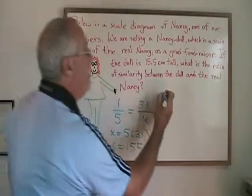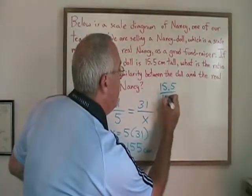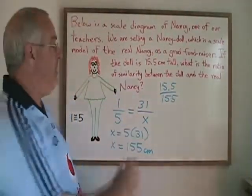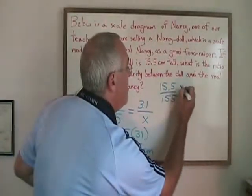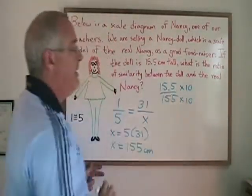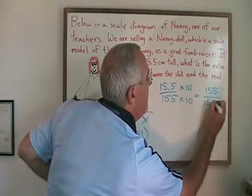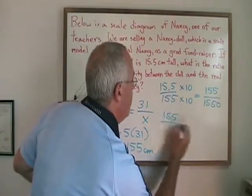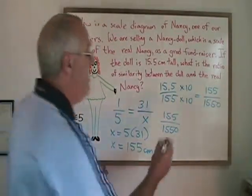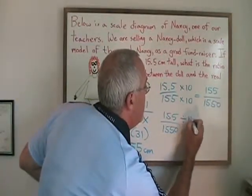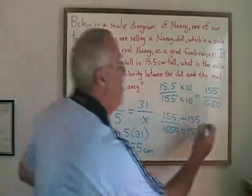Now we can take the height of the doll, 15.5, and put it over the height of the real Nancy, 155, and we have a ratio of similarity between the doll and Nancy. But this can be simplified. The first thing I will do is multiply both top and bottom by 10 to get rid of the decimal in the numerator, and I get 155 over 1550. The 155 and 1550 have a common factor of 155, so I can simplify further by dividing both top and bottom by 155.